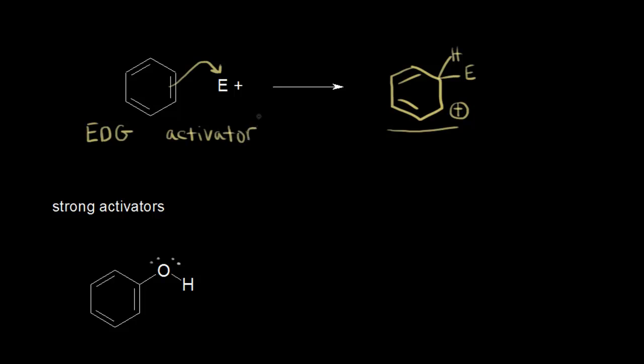If we think about the opposite situation — a substituent on the ring that overall decreased the electron density in that ring — the ring would not be as nucleophilic; you could think about the ring as being a little bit more positively charged. That would destabilize the positively charged sigma complex. A substituent that overall decreased the electron density in the ring we could call an electron withdrawing group, because it's withdrawing electron density from the ring. That would deactivate the ring towards electrophilic aromatic substitution — we call this a deactivator — and the reaction would be slower than that of benzene by itself.